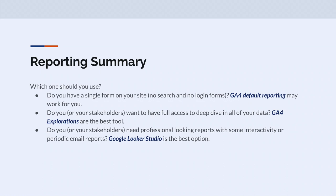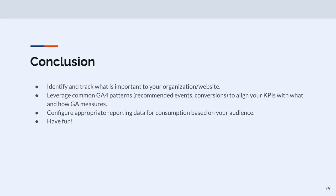Which reporting option should you use? If you have a single form on your site and no search or login forms, default reporting probably works. If your stakeholders want to do a deep dive into all the data, explorations are probably the best tool. If you or your stakeholders need professional-looking reports — like leadership needs it in a meeting or marketing director needs to report up — Looker Studio is really nice. If people need regular reports, Looker Studio will allow you to email those to them on a schedule. In conclusion: identify and track what's important to your website; recommend leveraging common GA4 patterns, recommended events, and conversions to align your KPIs with how GA4 measures; configure appropriate reporting; think about your audience — there are many options. And have fun.